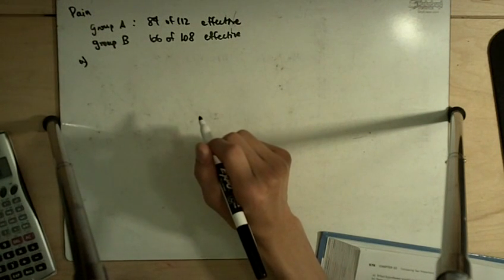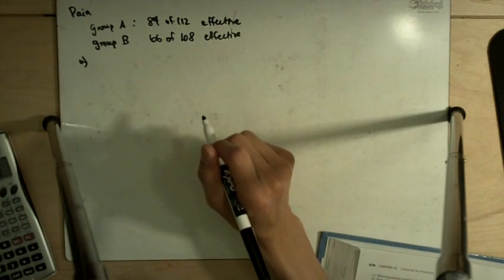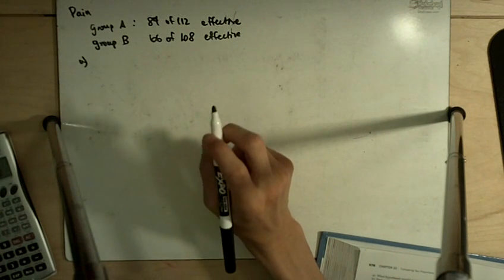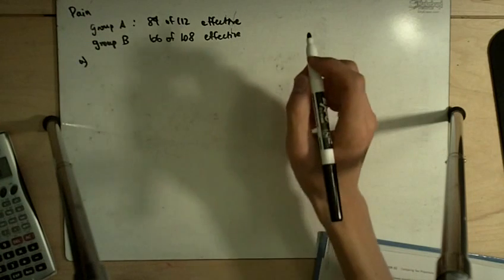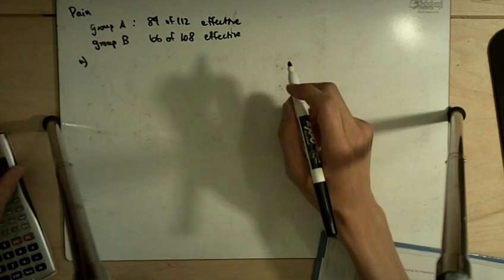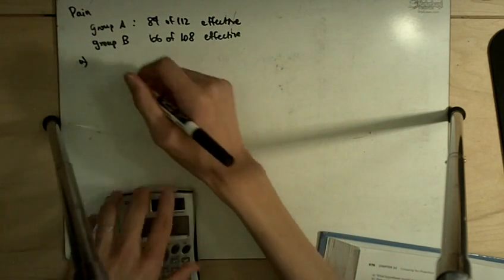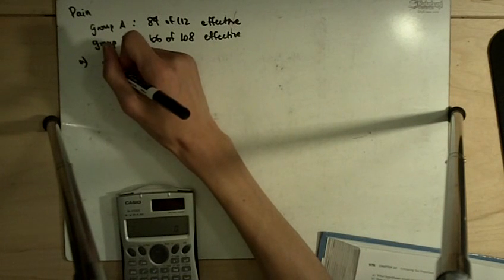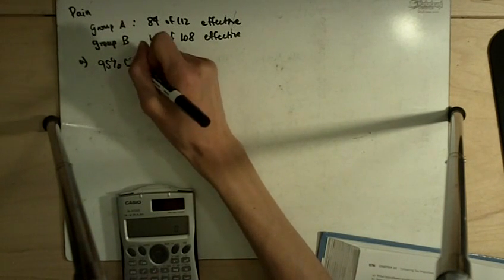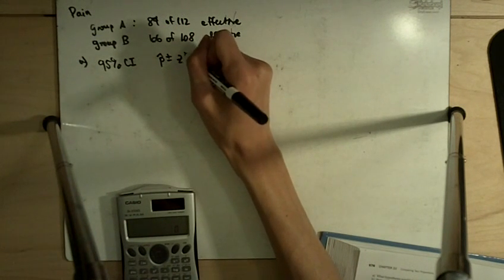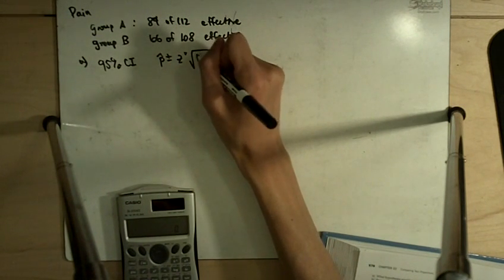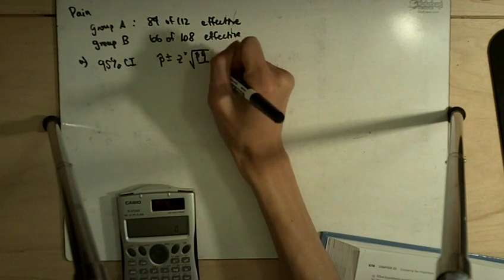Part A asks us to create a 95% confidence interval for the percent of people who may get relief from this kind of joint pain from using medication A. Alright, so this is just a single one proportion confidence interval, meaning that our 95% confidence interval will be P hat plus or minus Z star times the square root of P hat Q hat over N.